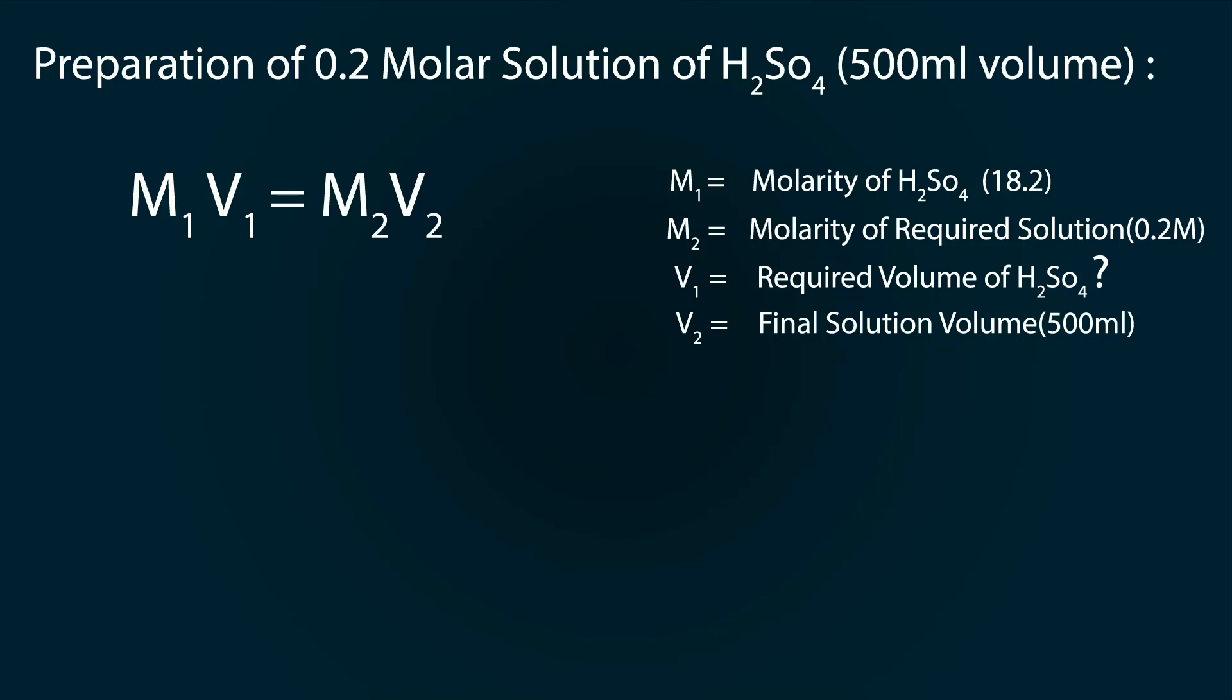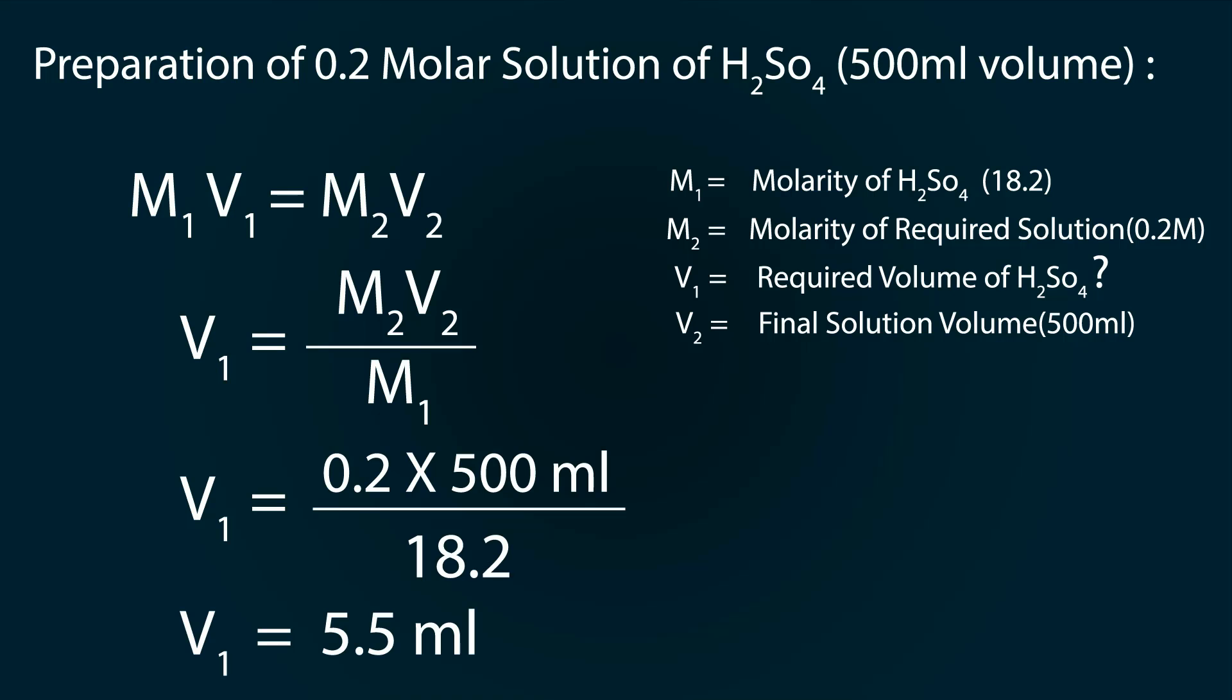Now let's start our calculation: V₁ = M₂V₂ ÷ M₁. Adding the values: 0.2 × 500 ÷ 18.2, you will get the volume as 5.5 milliliters.